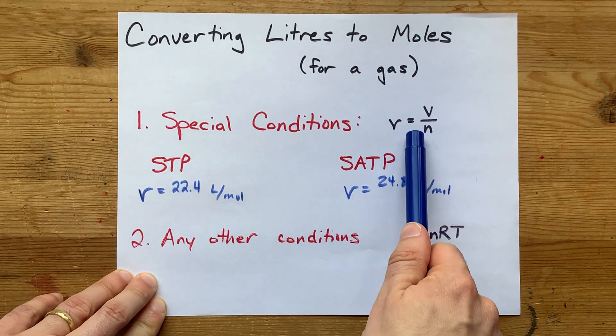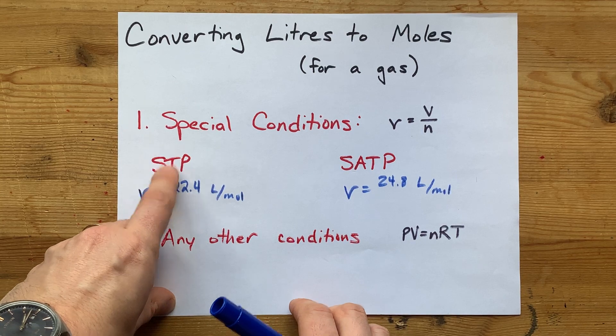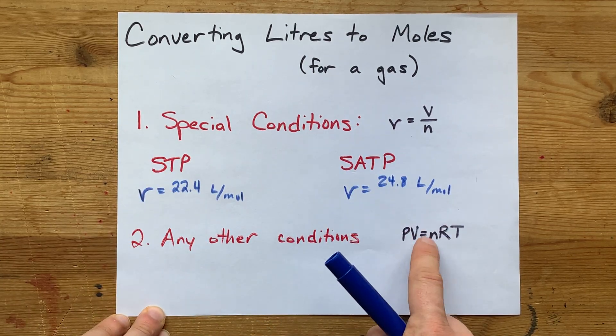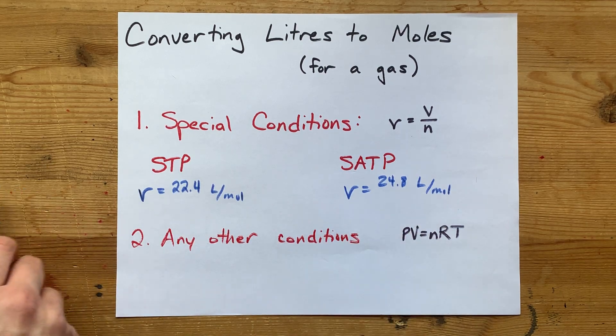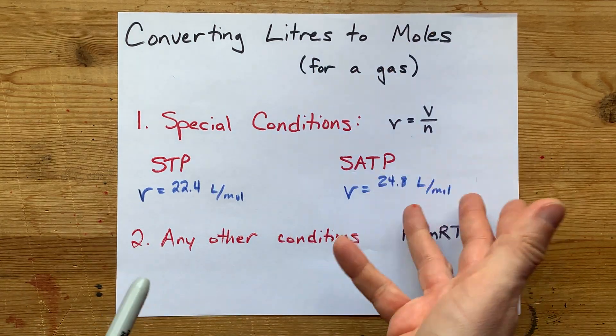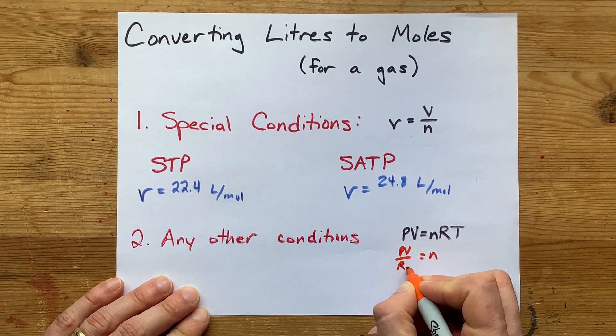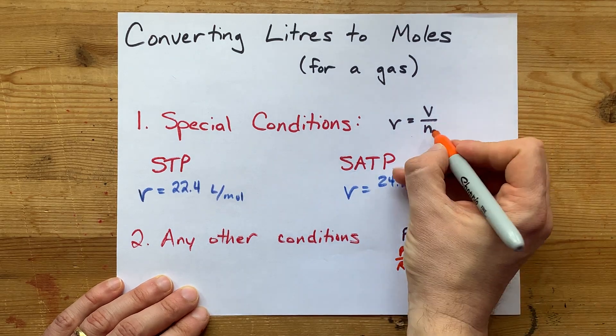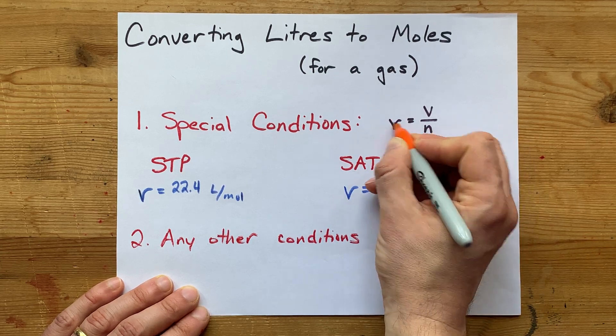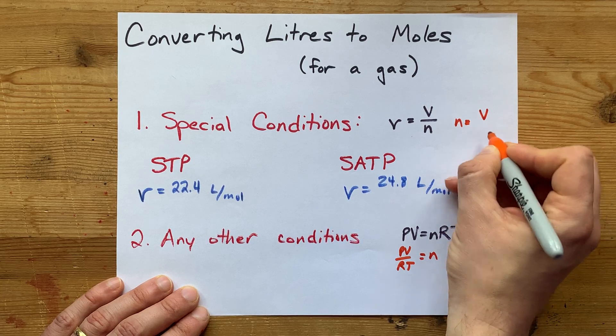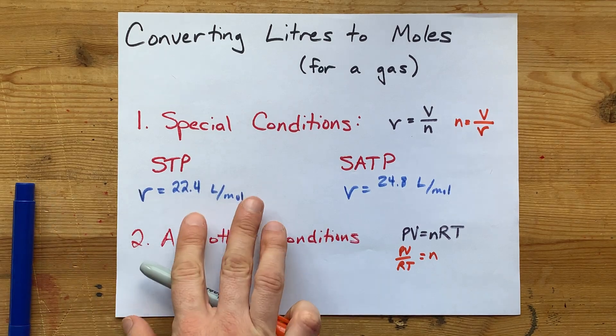There's a shortcut formula if it's special conditions. For any other conditions, if your teacher didn't specify STP or SATP, you'll use the ideal gas law: PV = nRT. More specifically, since you're converting to moles, it's n = PV/RT. For the special conditions formula, the number of moles is volume divided by the molar volume constant. Let's do three examples.